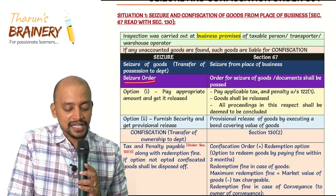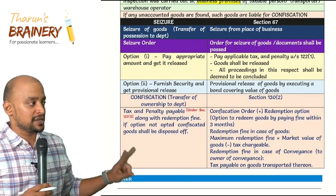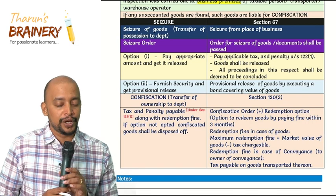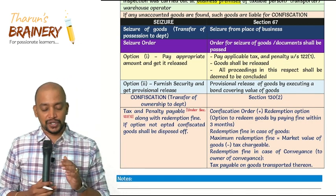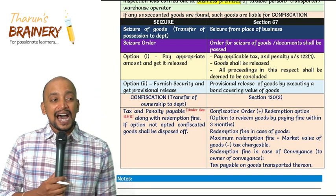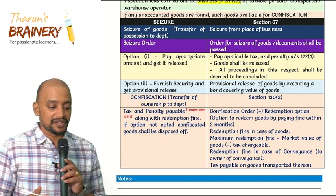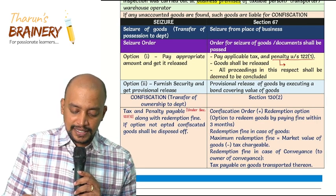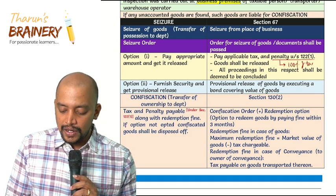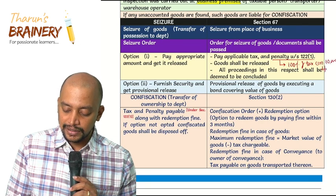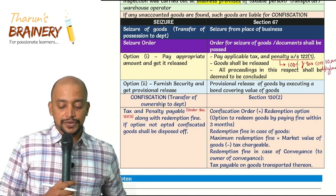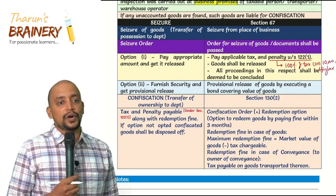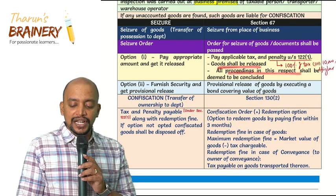Once the seizure order is passed by the department, the taxpayer has two options. Option number one: pay the appropriate amount to get the goods released. He can pay the tax and penalty under section 122 subsection 1. That penalty is 100% of the tax or ₹10,000, whichever is higher. Once the tax and applicable penalty is paid, the goods shall be released and all proceedings shall be deemed to be concluded — no further proceedings.